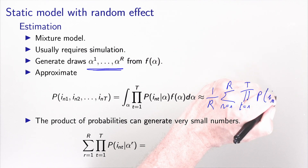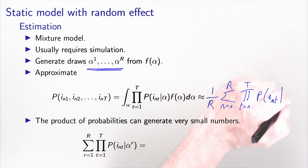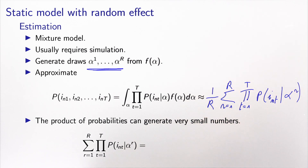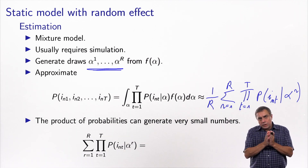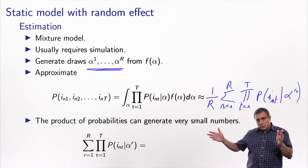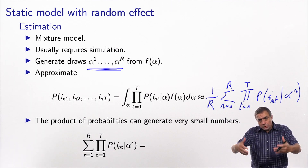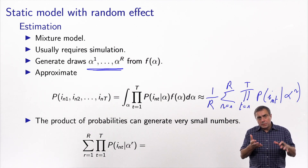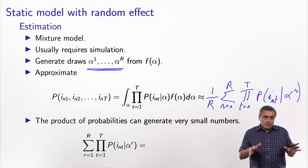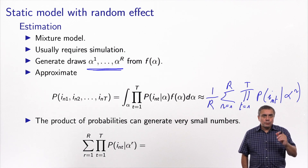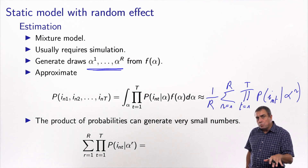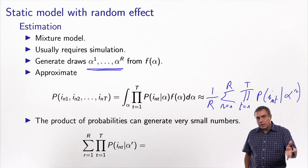For mixture models, the integral cannot be calculated analytically, so we rely on simulation to approximate it. We generate R draws from the density function, and the approximation is 1/R times the sum over R of the product of choice probabilities conditional on each draw — essentially the empirical mean. To address numerical issues from multiplying many small probabilities, an equivalent formula uses the log: take the exponential of the sum over T of the log of each conditional probability, then sum over R.